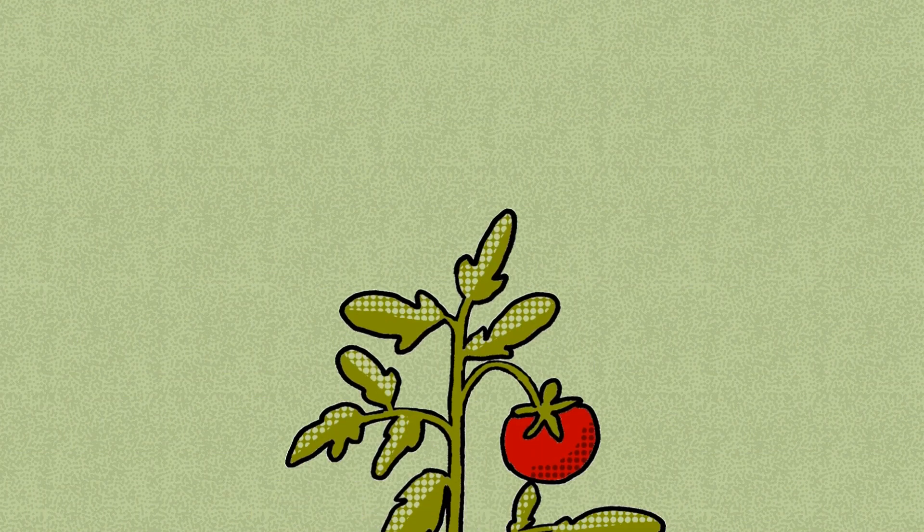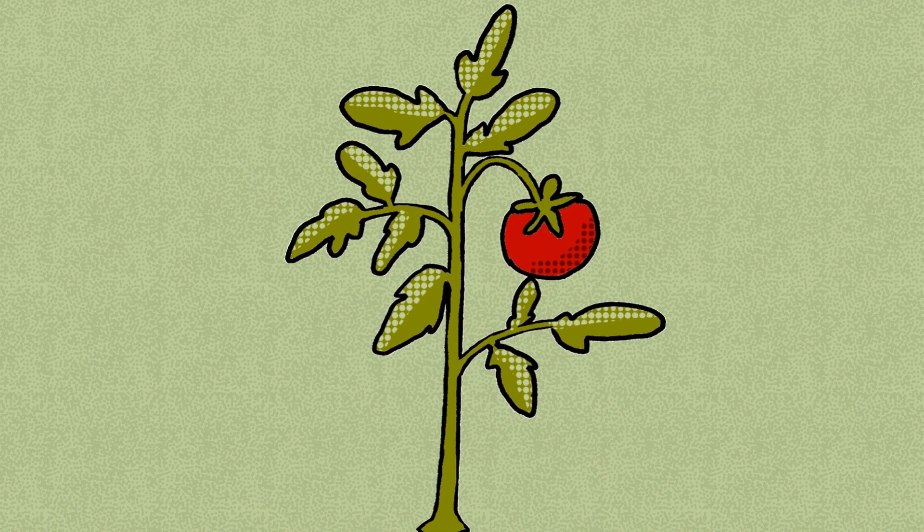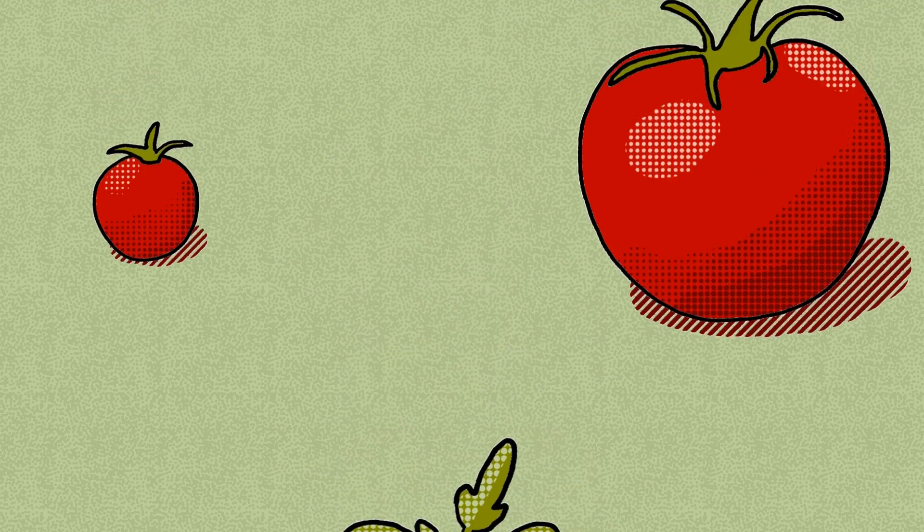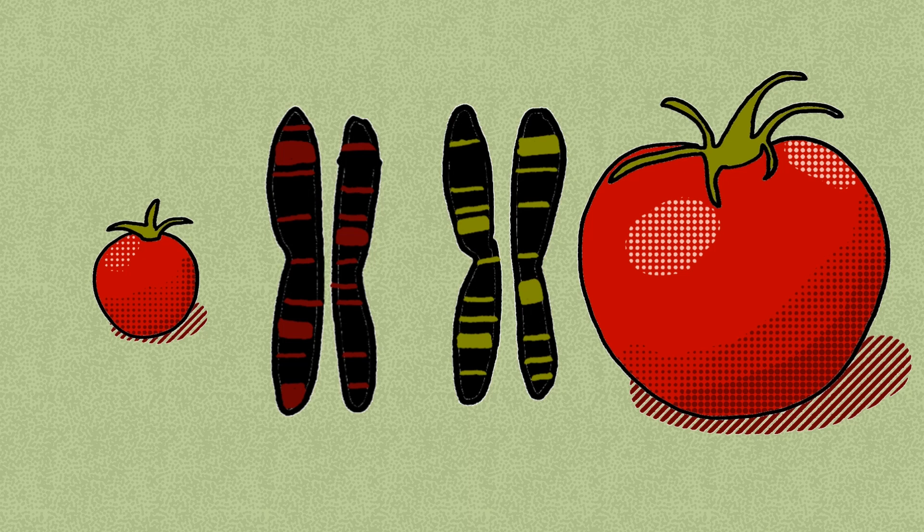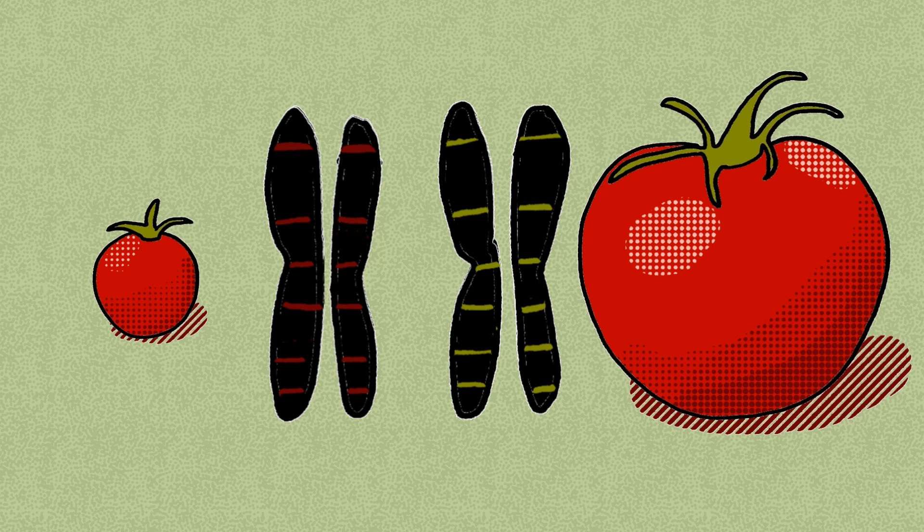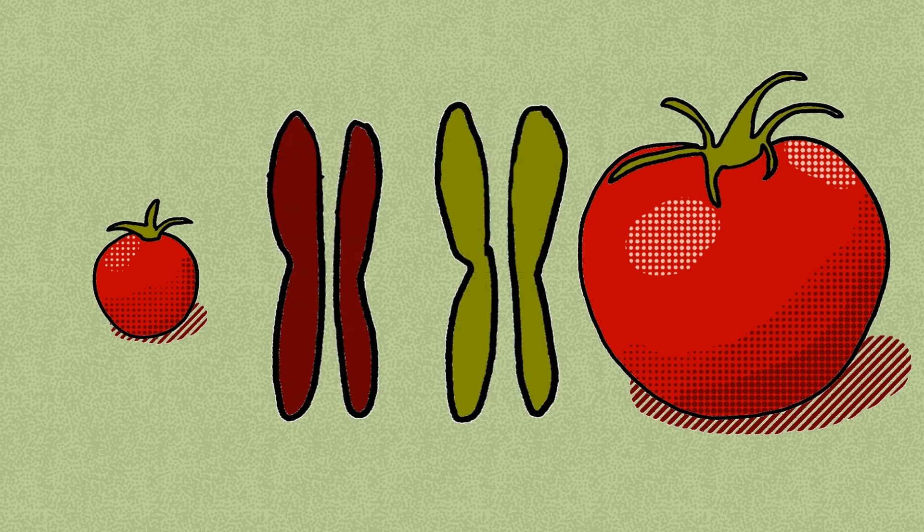Let's go back to that tomato example. If we want to find out which genes are responsible for size, we'll need two tomatoes as different in size as possible. We'll create a map of the genetic differences between them, focusing on points where the difference is present on both of a pair of chromosomes. We'll try and find as many of these as possible. The denser the map, the more accurately we can locate a gene.